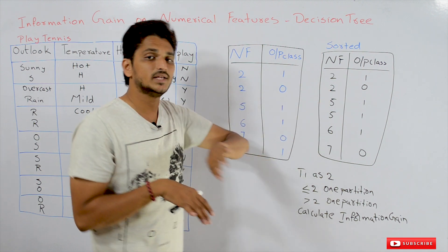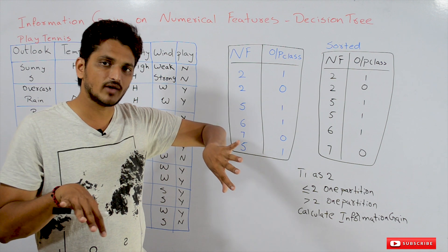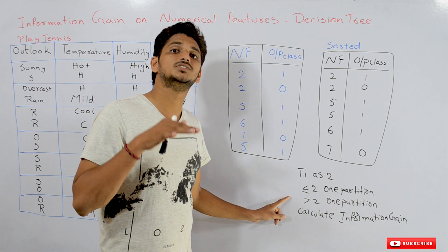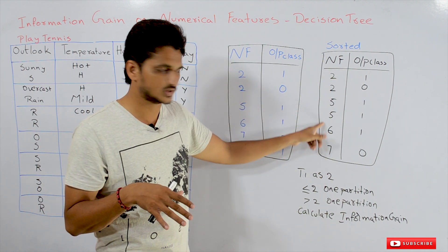Let us take value 5. The values that are less than or equal to 5 form one partition, and greater than 5 form another partition. Again calculate information gain. Do it on all the distinct numerical values which we got here.